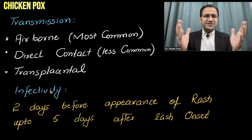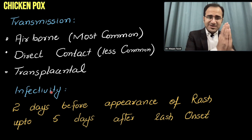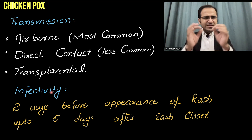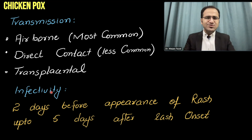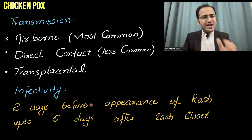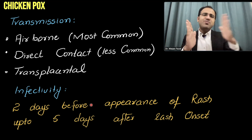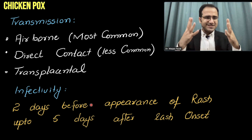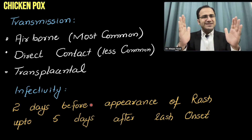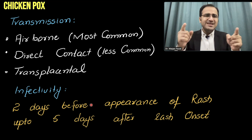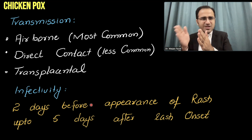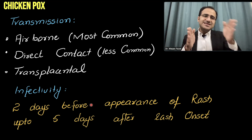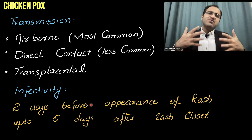Infectivity — when is it infectious? If a person gets varicella zoster virus, two days before the appearance of rash is the most infectious period. The patient is infectious from two days before the appearance of rash up to five days after the appearance of rash, or until all the lesions have fully crusted.